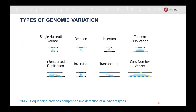There are lots of ways to categorize genomic variation, but for detection, it will be easiest to divide them into small variants and structural variants. Small variants include deletions and insertions of fewer than 50 base pairs, and single nucleotide variants. Structural variants include larger deletions and insertions, as well as tandem duplications, interspersed duplications, inversions, translocations, and larger copy number variants. HiFi sequencing provides comprehensive detection for all of these variant types.